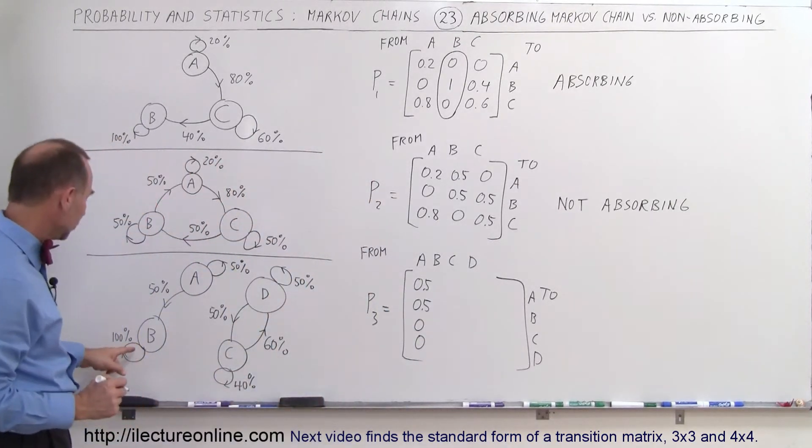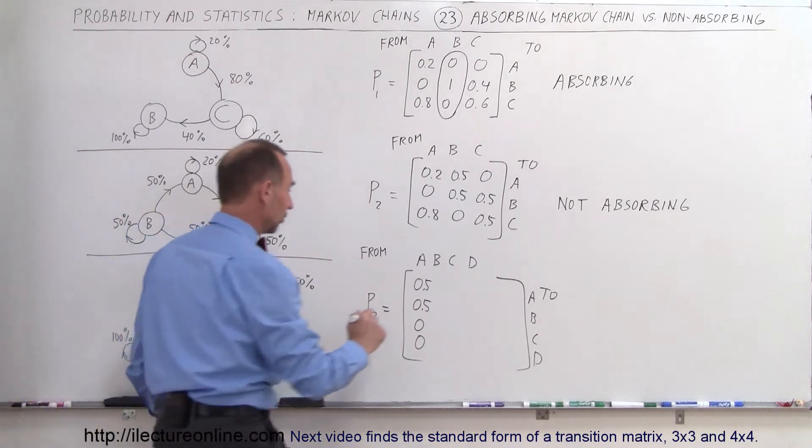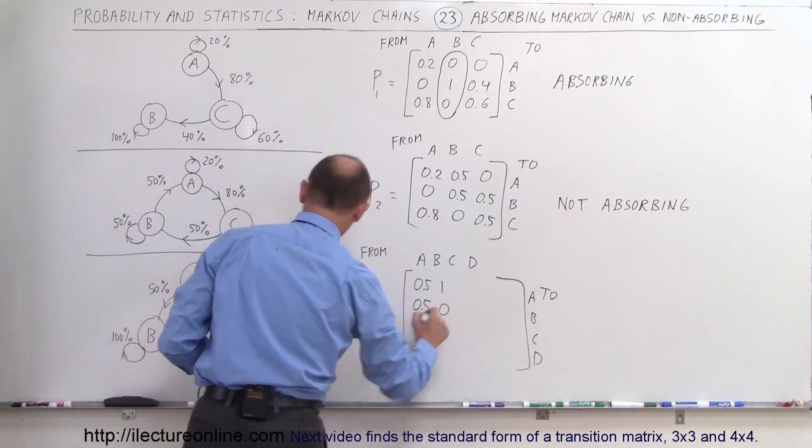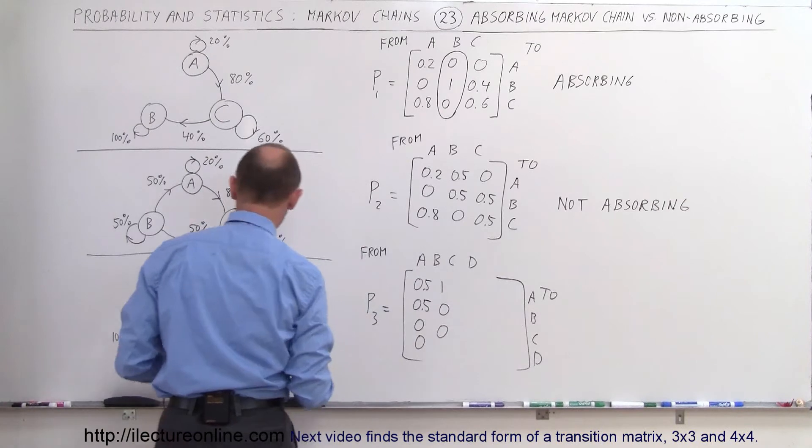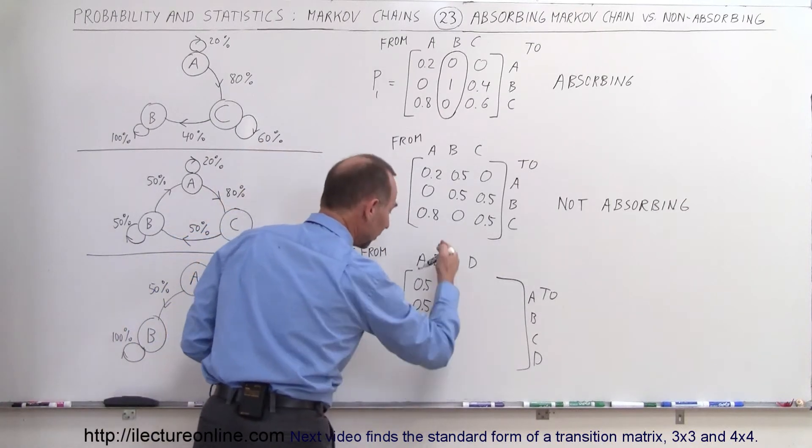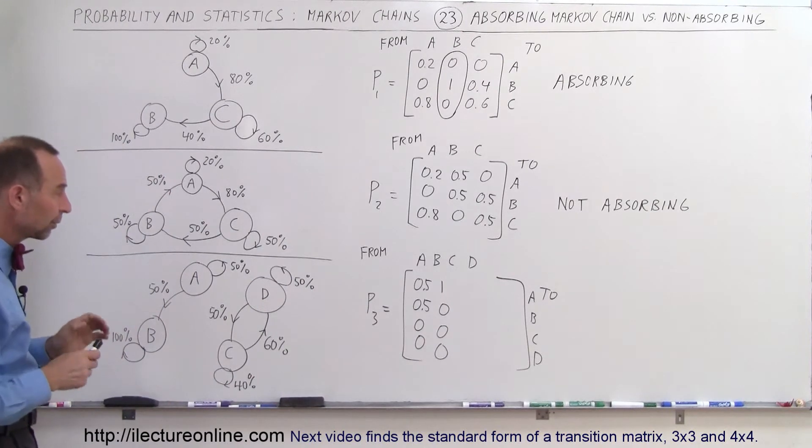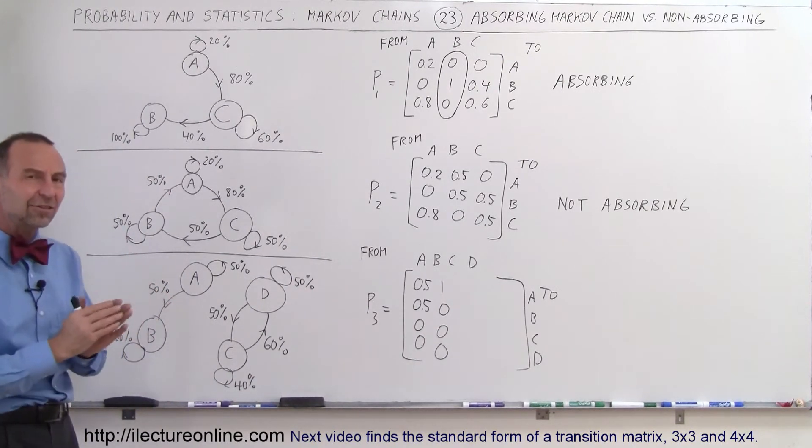Okay, what about B? Notice that B will retain 100% of its customers, so that will be a 1. And so from B to A is 0, from B to C is 0, and from B to D is 0. So here it appears as if we would have what we would call an absorbing Markov chain. But let's keep going and make sure that this still satisfies the definition.